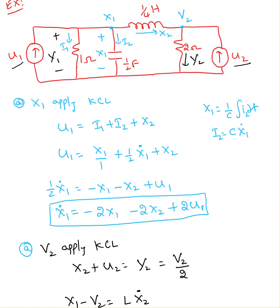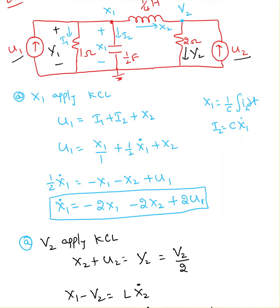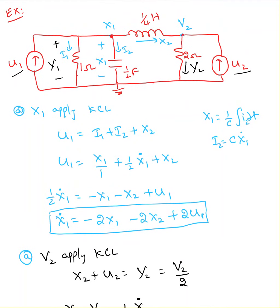Always choose the state variables as the voltage drop across the capacitor and the current passing through the inductor. So I chose x1 as one state variable (capacitor voltage) and x2 as the current passing through the inductor. I'm going to use nodal analysis, so I'll ground this node. The voltage at this node is x1, since x1 minus 0 equals x1.